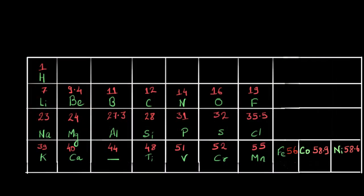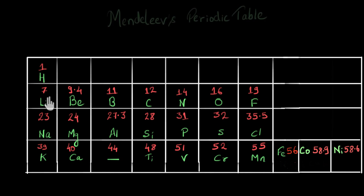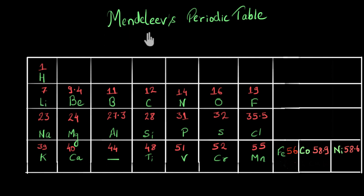For example, our earlier periodic table — Mendeleev's periodic table — was based on elements being arranged in the increasing order of their atomic mass. This is mass of hydrogen, this is mass of lithium, and not the atomic number. The earlier scientists, including Mendeleev, had no clue about electrons, protons, or atomic number, so they arranged elements based on increasing order of atomic mass.